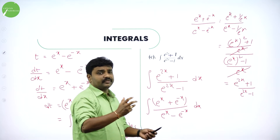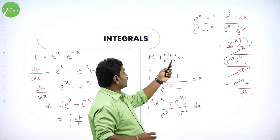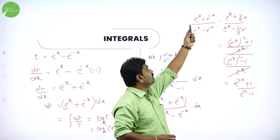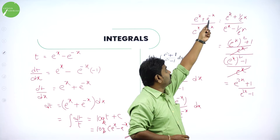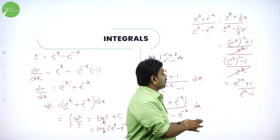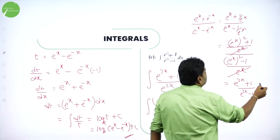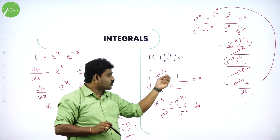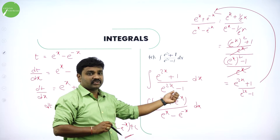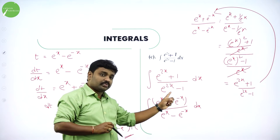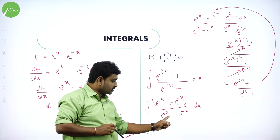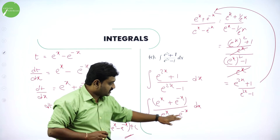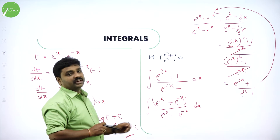So, this problem becomes a little tricky. Writing e power 2x plus 1 by e power 2x minus 1 as e power x plus e power minus x by e power x minus e power minus x is the trick of the problem. Then, take this as t and you will get the numerator.